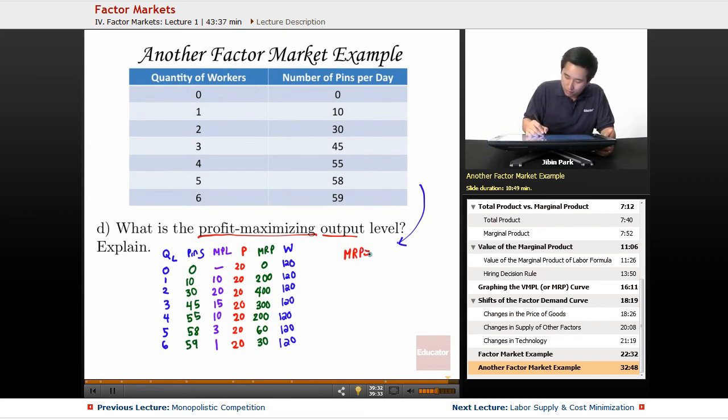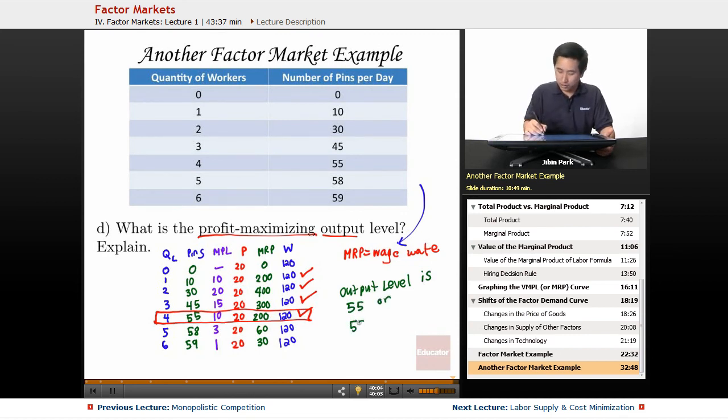What is the profit-maximizing output level? Now we have all the information. The formula is where the MRP equals the wage rate. Yes, you hire the first worker, yes the second worker, yes the third and the fourth, but not the fifth worker. It'd be helpful if you box this entire row. The output level is going to be—what is the number of pins? 55, or another acceptable answer would be 55 to 58 pins.